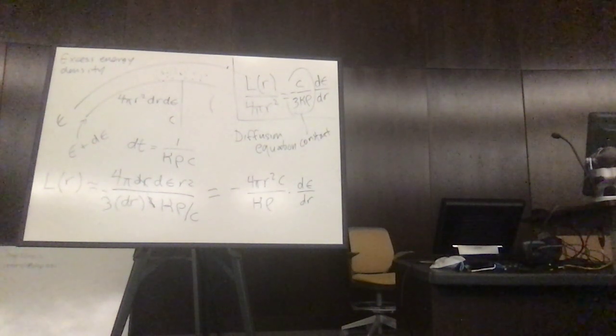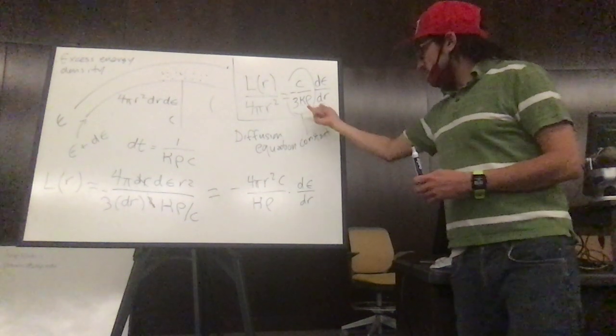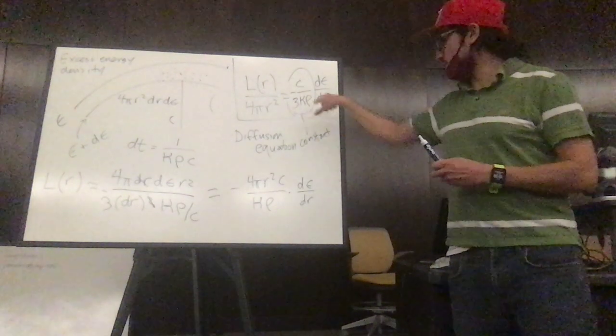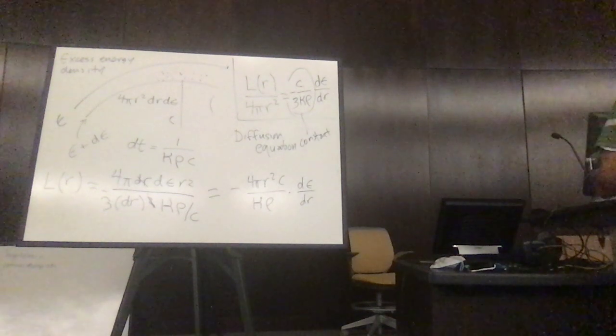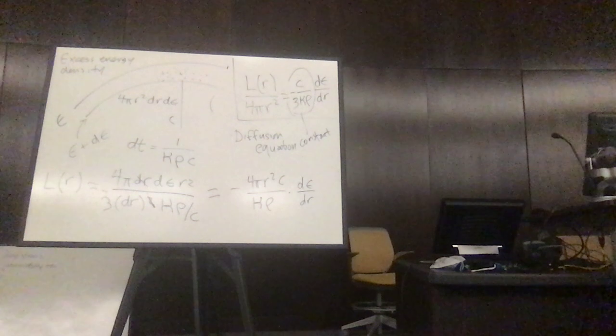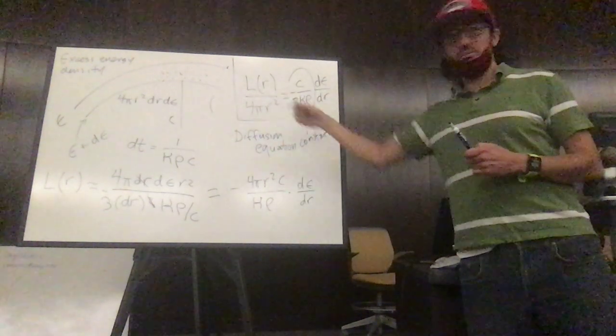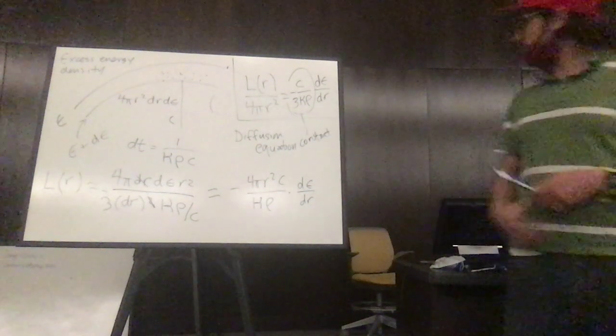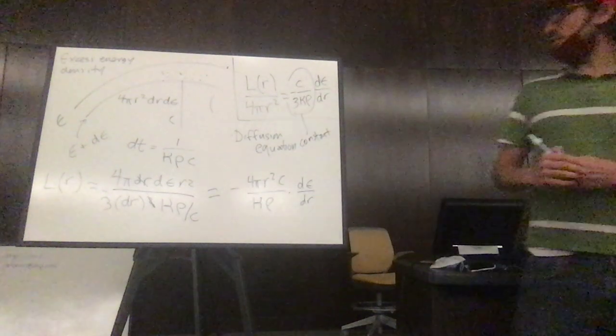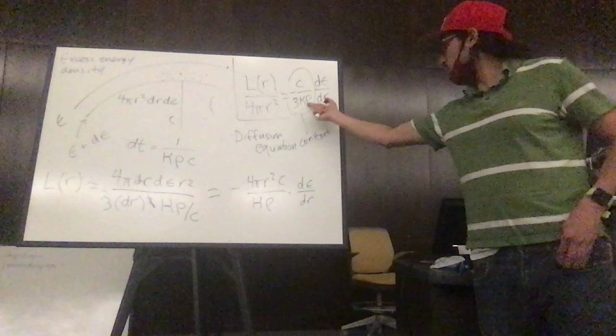So what happens if your, this kappa now, we're going to call it opacity. And it includes mostly the absorption but it can include a little bit of the scattering terms also. So what happens if the opacity is really big? What happens to the luminosity? Goes down. So if you are very opaque you don't emit a lot of light. If the opacity is small then the luminosity is high. So this equation tells you how much the photons struggle to get out of wherever they are in the star.